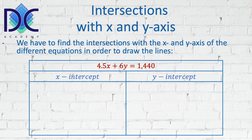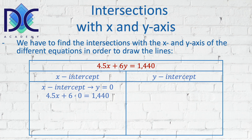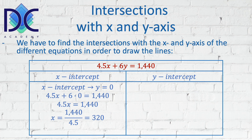When we look at the first equation, 4.5x + 6y = 1440, we have to find the x-intercept and then the y-intercept. For the x-intercept, y is equal to 0, so we have 4.5x + 6(0) = 1440, which gives 4.5x = 1440. Dividing 1440 by 4.5 we find the x-coordinate is 320, so the x-intercept is at (320, 0).